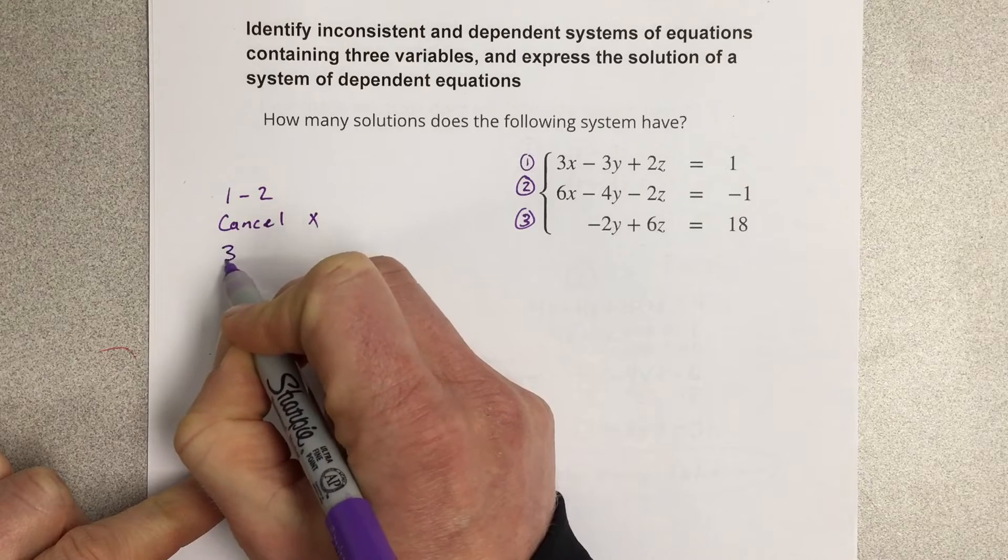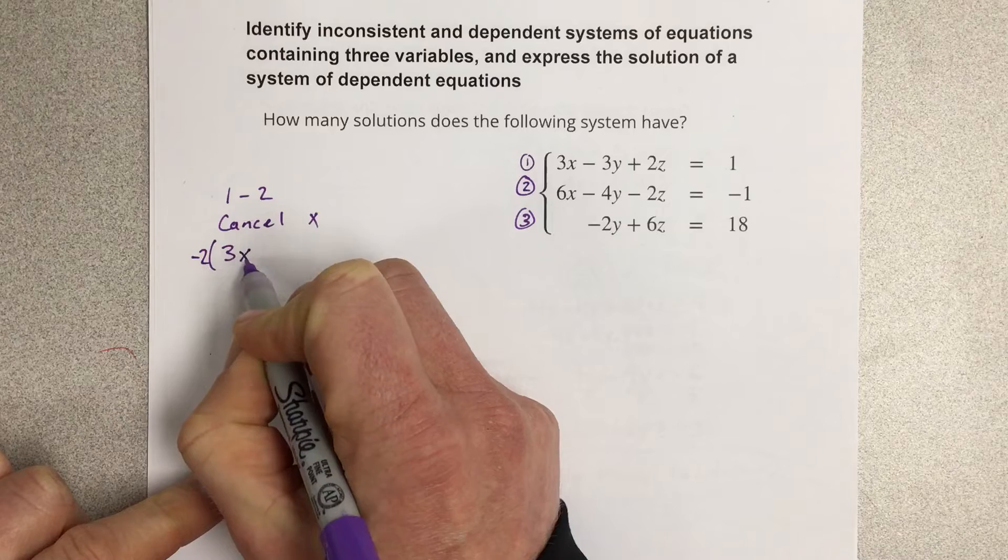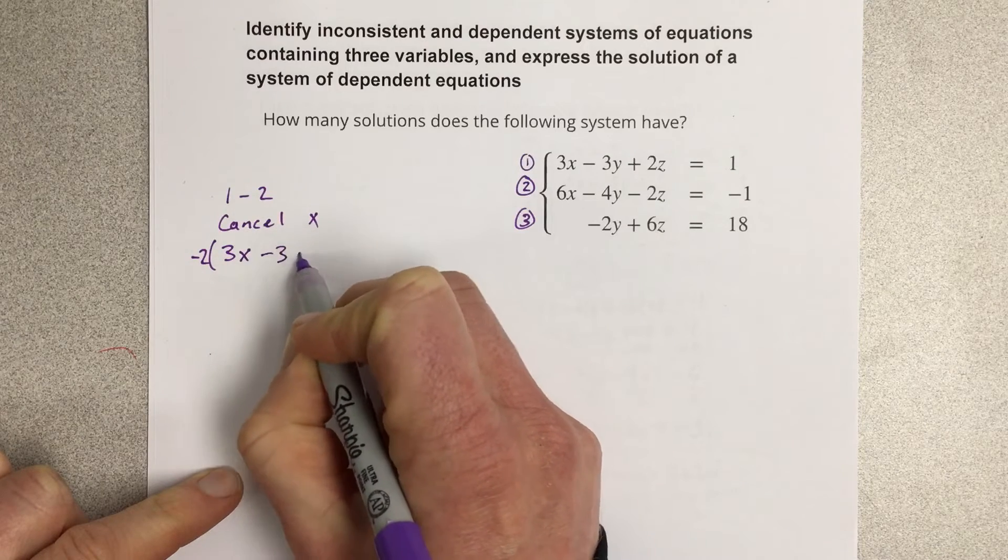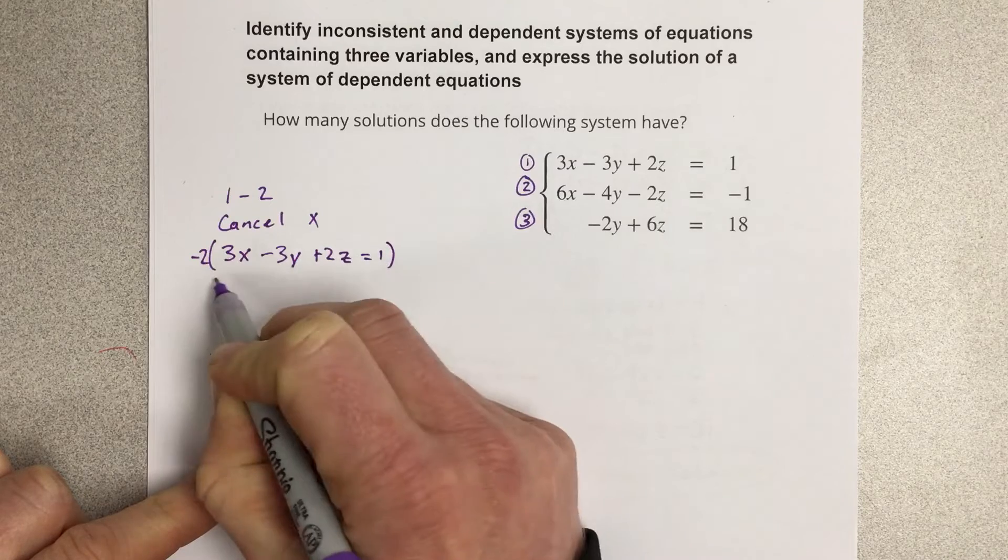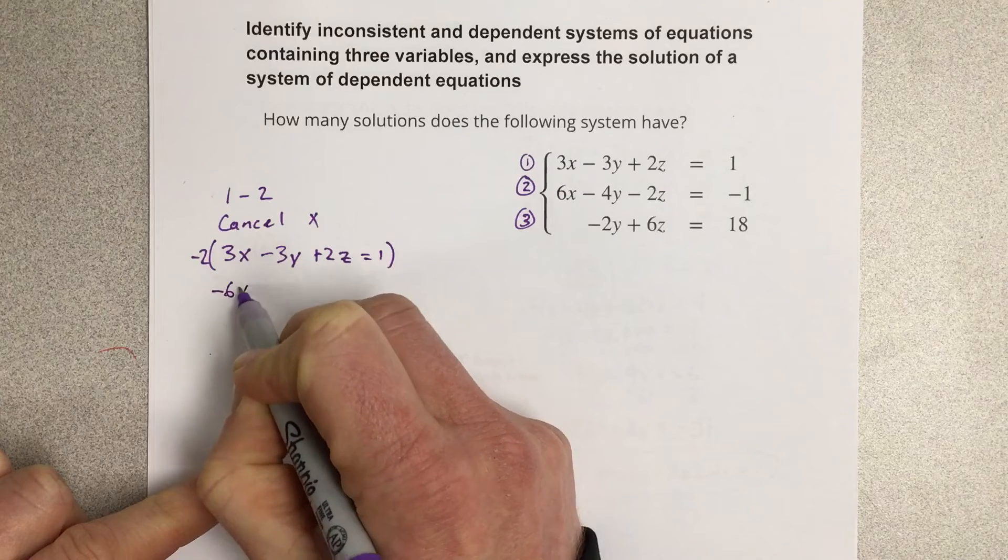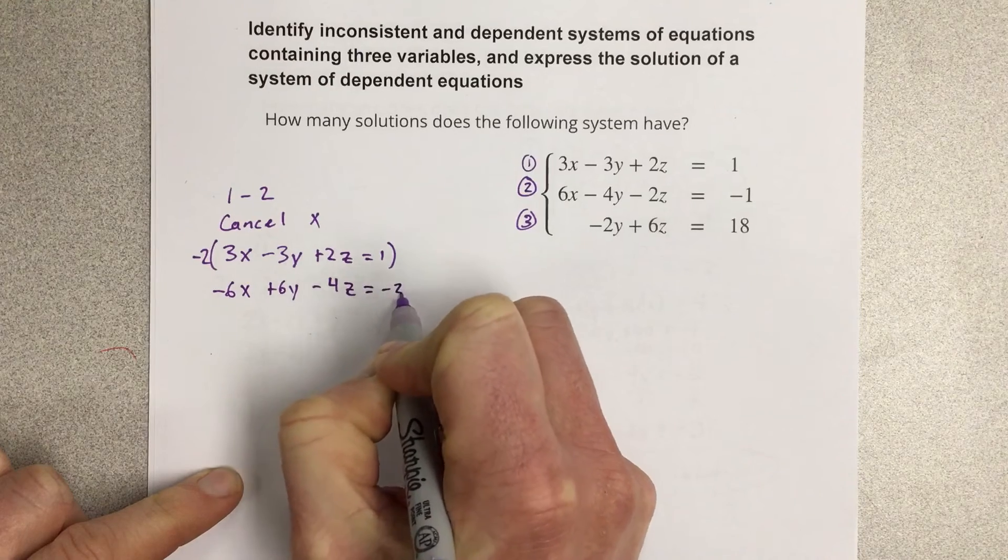Now I'm going to need to multiply the top equation by negative two. So that's 3x minus 3y plus 2z equals 1. Multiplying it by negative two, so that's negative 6x plus 6y minus 4z equals negative 2.